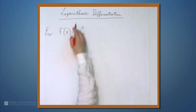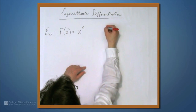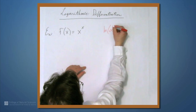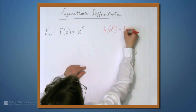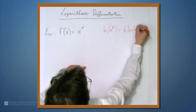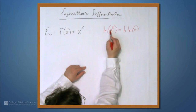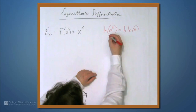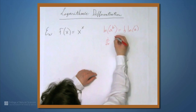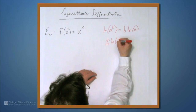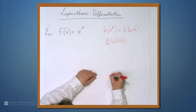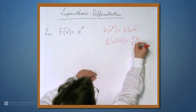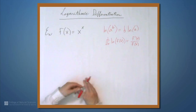We're going to use logarithmic differentiation, and this relies on the identity: natural log of a to the b equals b times the natural log of a. If we have an exponent inside the natural log, we can bring it out, as long as a is positive. Also remember: the derivative of the natural log of f(x), for any function f, is f prime over f(x). This is a nice formula.